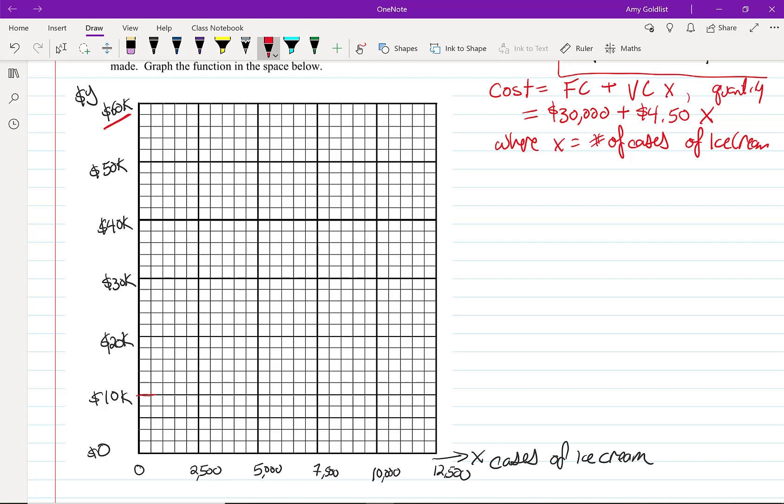So let's start with cost. Our intercept is going to be zero. When I have zero cases of ice cream, our cost is $30,000. So zero, $30,000. Now I'm gonna come up with something else.